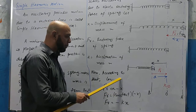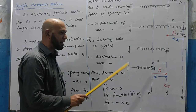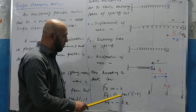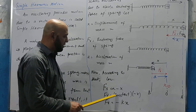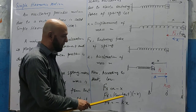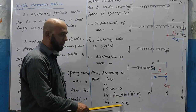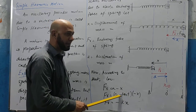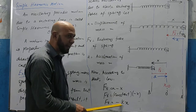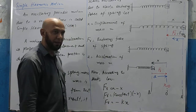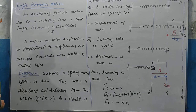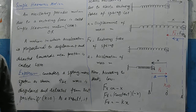So the restoring force also has a constant k, giving FR = k × (−x), which equals −kx. The constant k is the spring constant. So FR = −kx. Write this down up to this point.